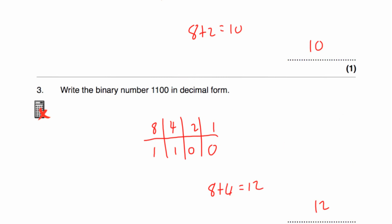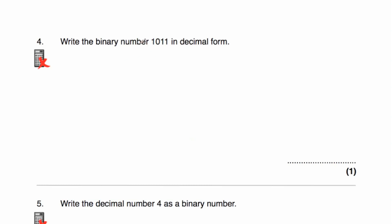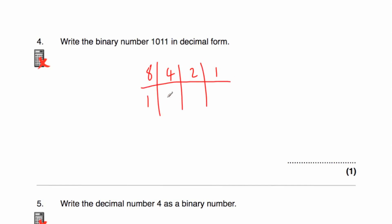Let's have a look at question four. Question four says, write the binary number 1011 in decimal form. Write in our columns: 1, 2, 4, 8. We've got 1011: one 1, one 2, no 4s, and one 8. So 8 plus 2 plus 1 — 8 plus 2 is 10, plus 1 is 11. The binary number 1011 in decimal form is 11.